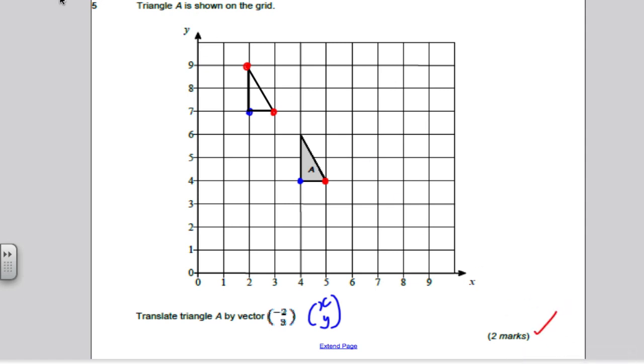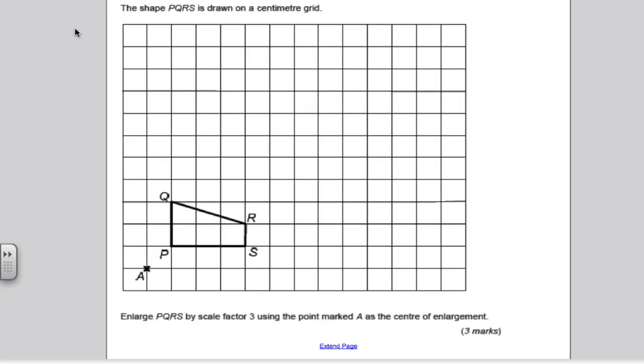Next question, pause the video, have a go, mark your work. It says PQRS is drawn on the centimeter grid. Enlarge it by scale factor 3 using the point marked A as the centre of enlargement. This is where everything is in reference to. The way I usually do these, I mark out my scale factor 3.